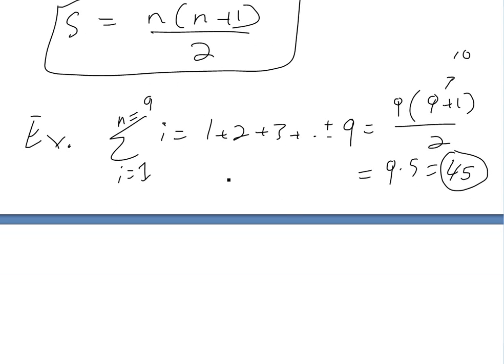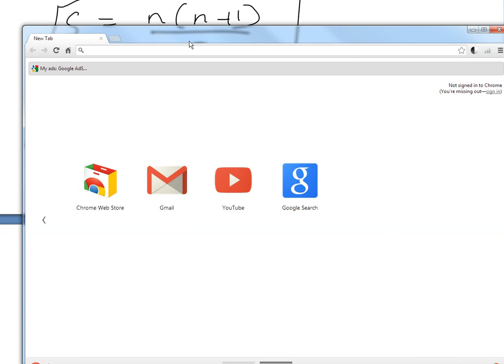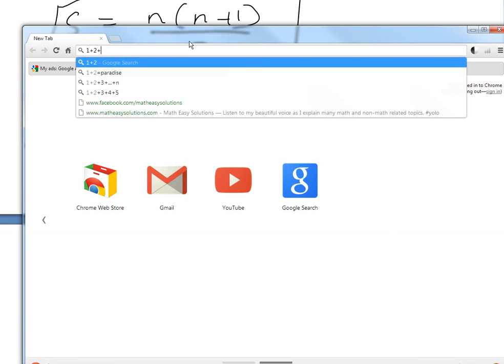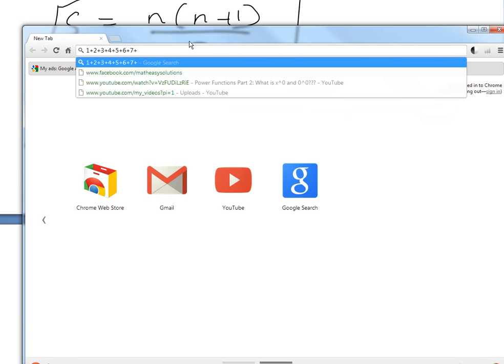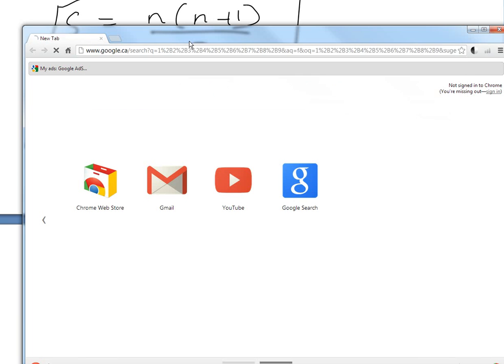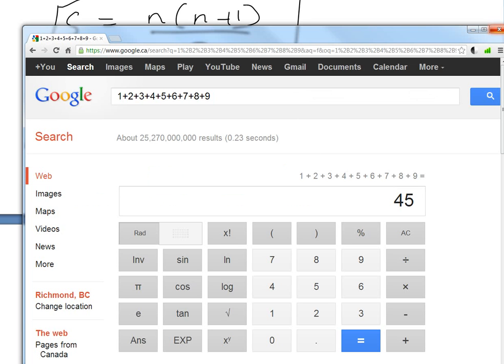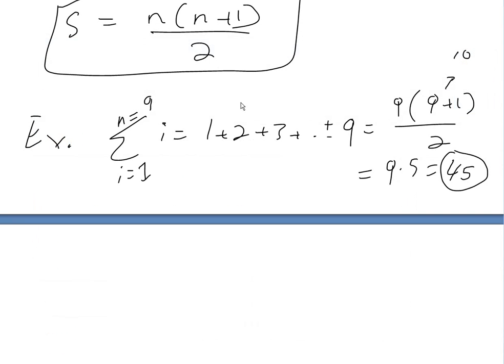You could even test that out here. Let's just add these up with the calculator. Let's just go 1 plus 2 plus 3 plus 4 plus 5 plus 6 plus 7 plus 8 plus 9. Yeah, 45. As you can see, it works here.